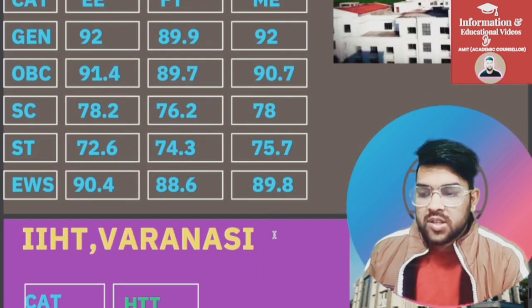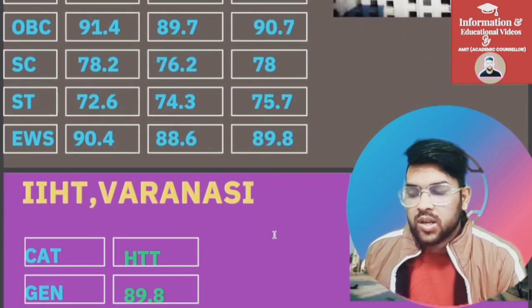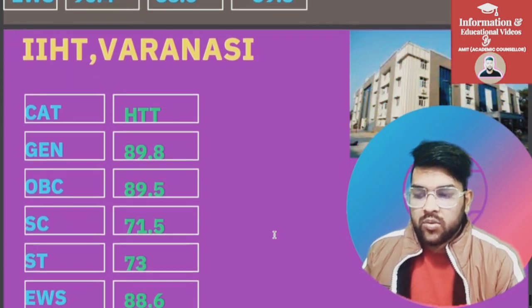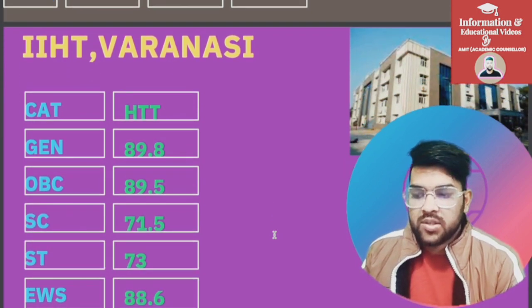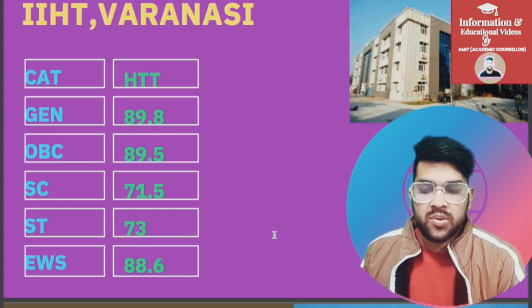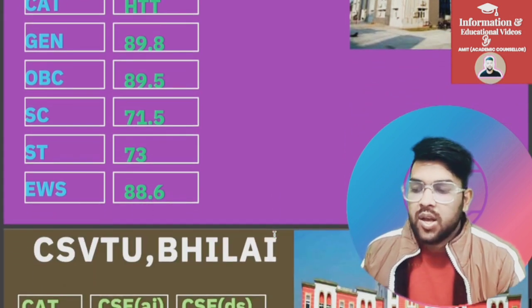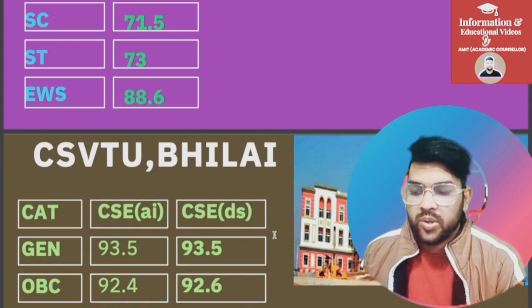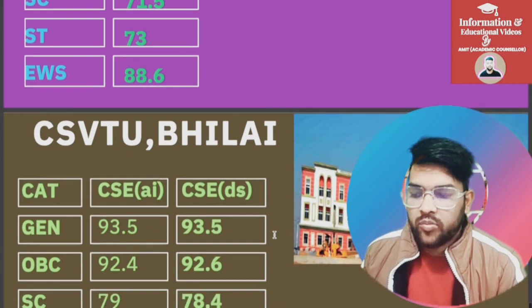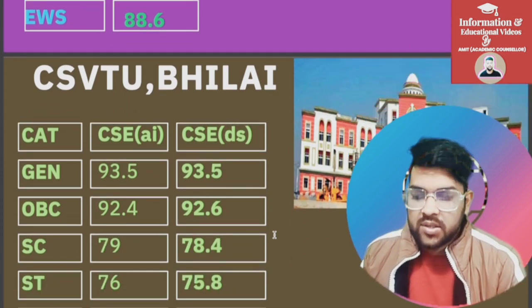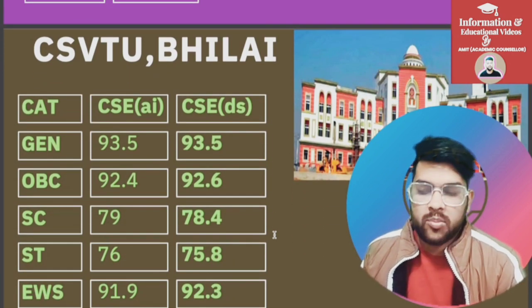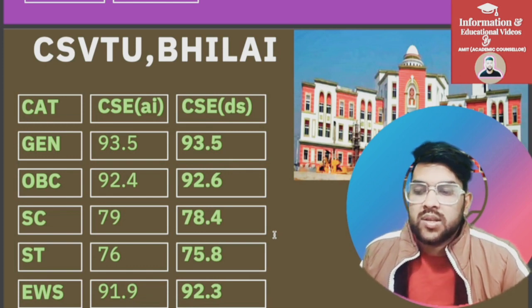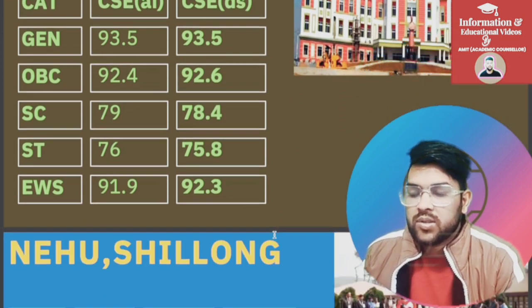For IIST Varanasi: General 89.8, OBC 89.5, SC 71.5, ST 73, EWS 88.6 percentile. For CSVTU Villai — for CSC AI: General 93.5, OBC 92.4, SC 79, ST 76, EWS 91.9 percentile. For CSC Data Science you can check slide-wise.